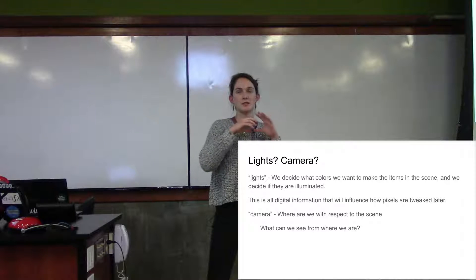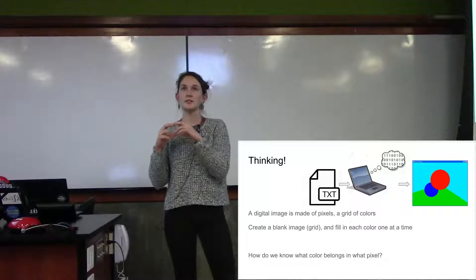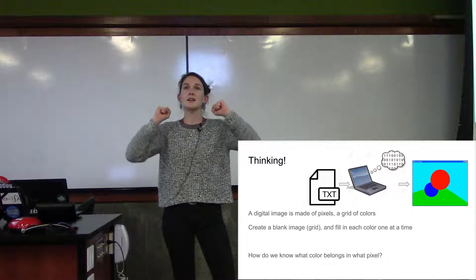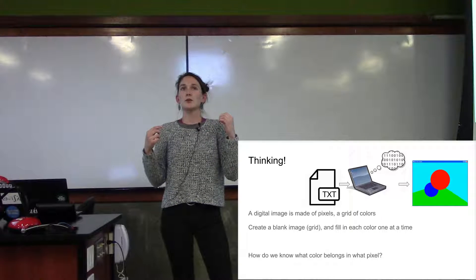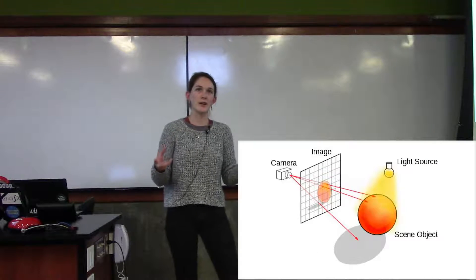So we're going to put a text file with that information about our scene into our computer. It's going to do some thinking. It's going to produce that output image. And basically an image is just a grid of colors. So how do we know what color belongs in what part of that grid?